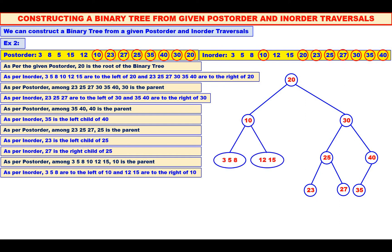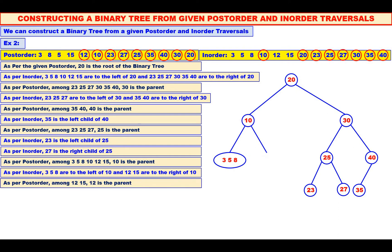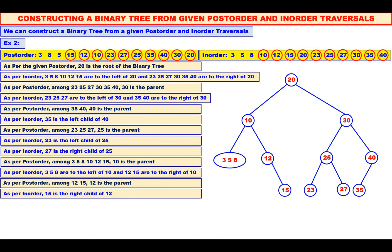Because it is post-order, we have to consider the right one. Among 12 and 15, which is the root? See the post-order — it is 12. Mark 12 and also mark 12 in the inorder. Now, 15 is to the right of 12. Therefore, 15 should be the right child of 12.